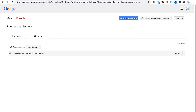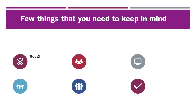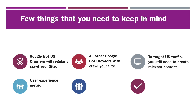Now that you have informed Google about your target audience country, here are a few things to keep in mind. You will continue to get worldwide traffic if you create content for a worldwide audience. However, the Google US crawler will crawl your web pages more frequently than other country-based crawlers, giving you an added edge with indexing prioritized for US audience.